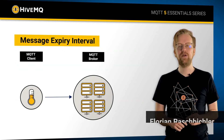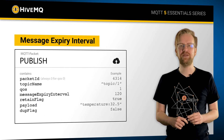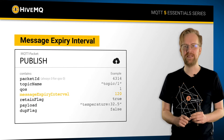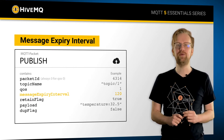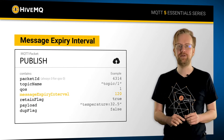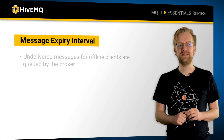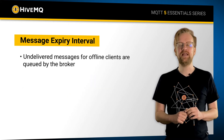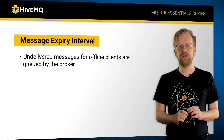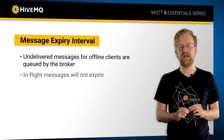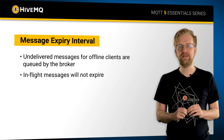The message expiry can be set on a publish and defines the amount of time in seconds after which a message gets cleared by the broker in case it is not delivered. Not delivered in this case means that the message is queued for a client that is not online. Note that messages that are already in flight will not expire on the broker.